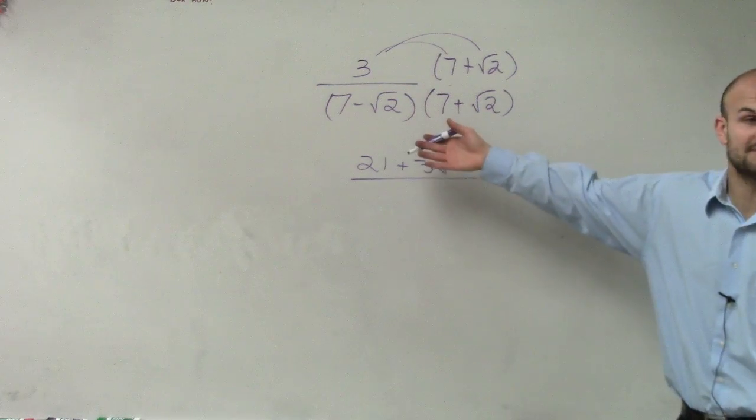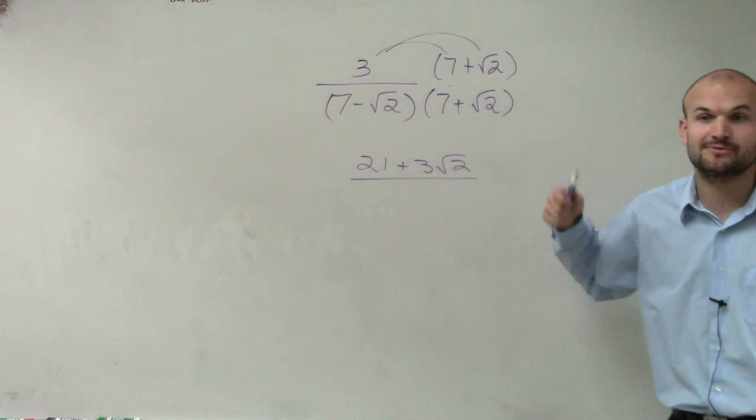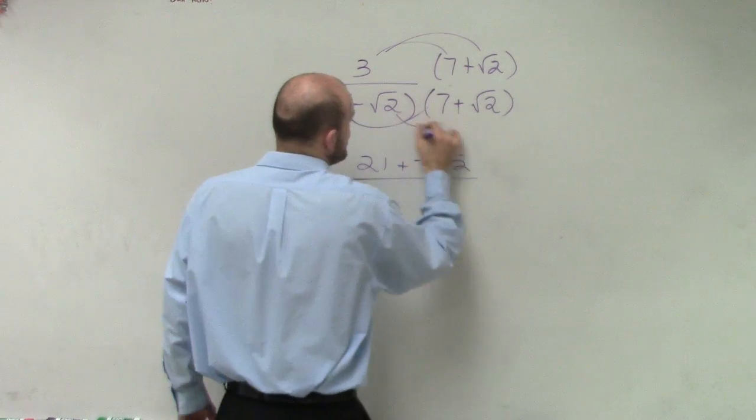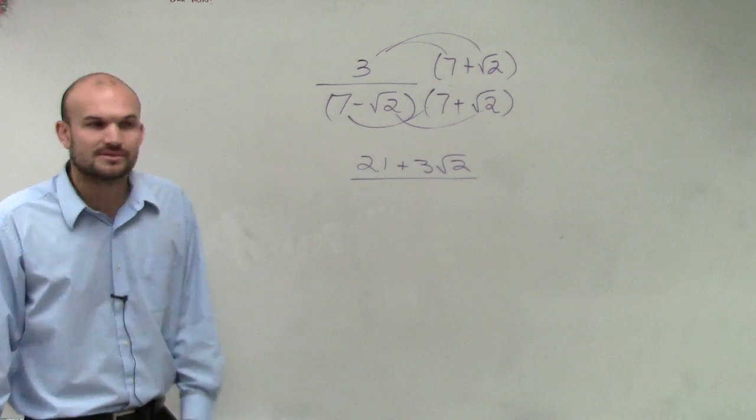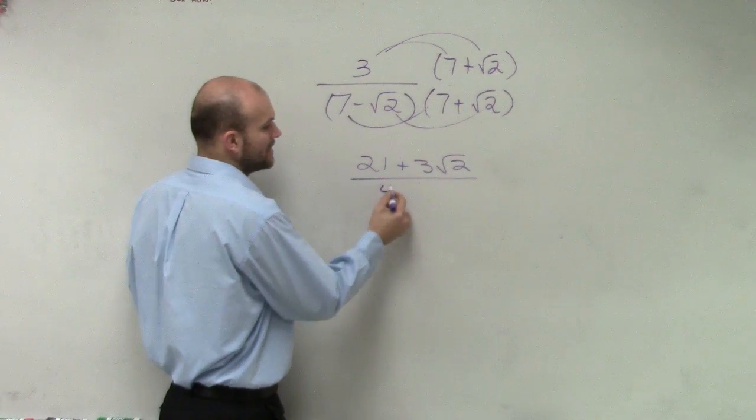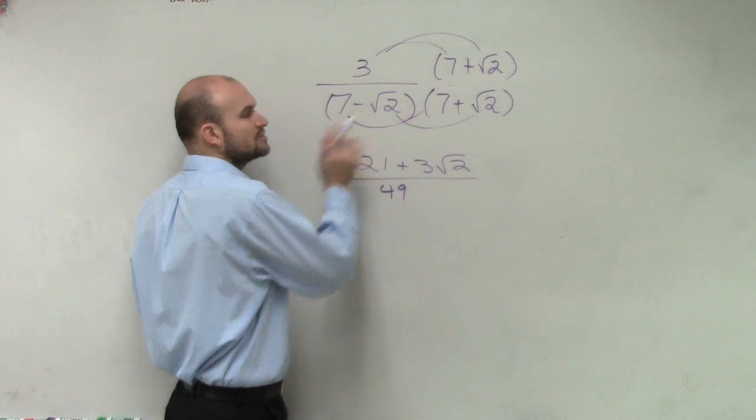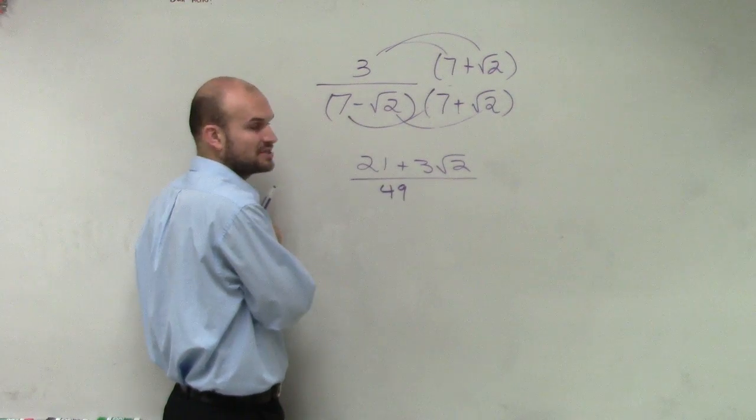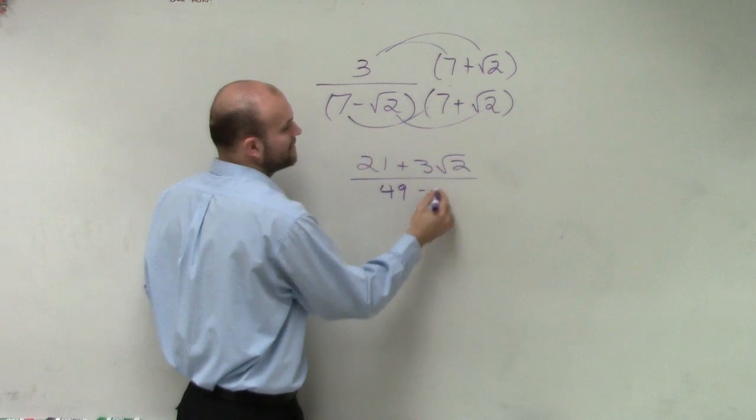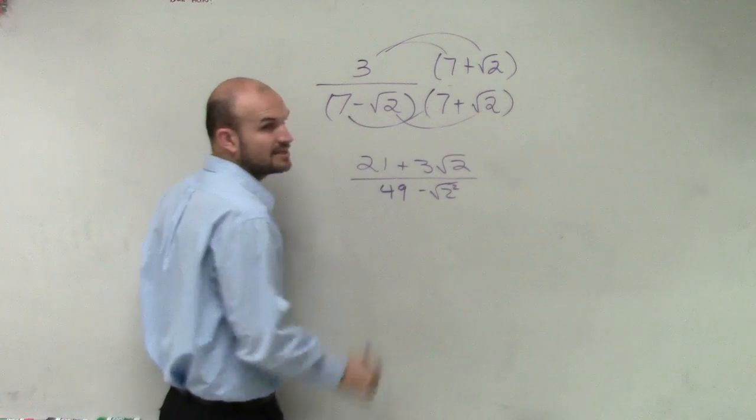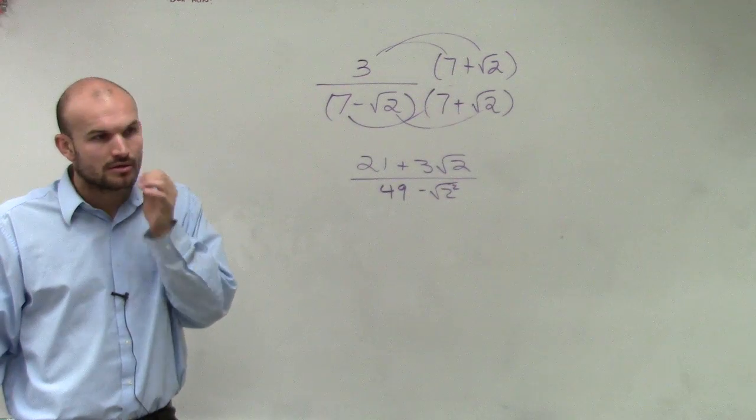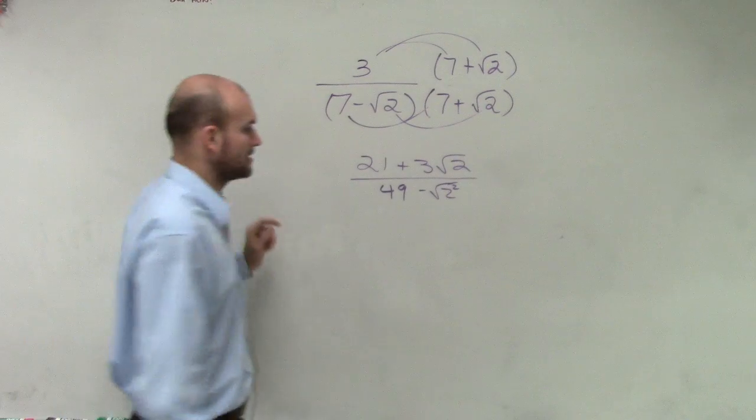However, we know this is a difference of two squares, meaning my middle terms cancel out. All I need to do is multiply my first two and my last two terms. 7 times 7 is 49. Negative square root of 2 times positive square root of 2 is going to be negative square root of 2 squared. Yes, sorry. Let me help you out in a second, okay?